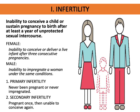Sterility is the inability to conceive because of a known condition. Female infertility is the inability to conceive or deliver a live infant after three consecutive pregnancies, while male infertility is the inability to impregnate a woman under the same conditions. Primary infertility means the couple has never been pregnant, while secondary infertility means they were pregnant once but are then unable to conceive again.